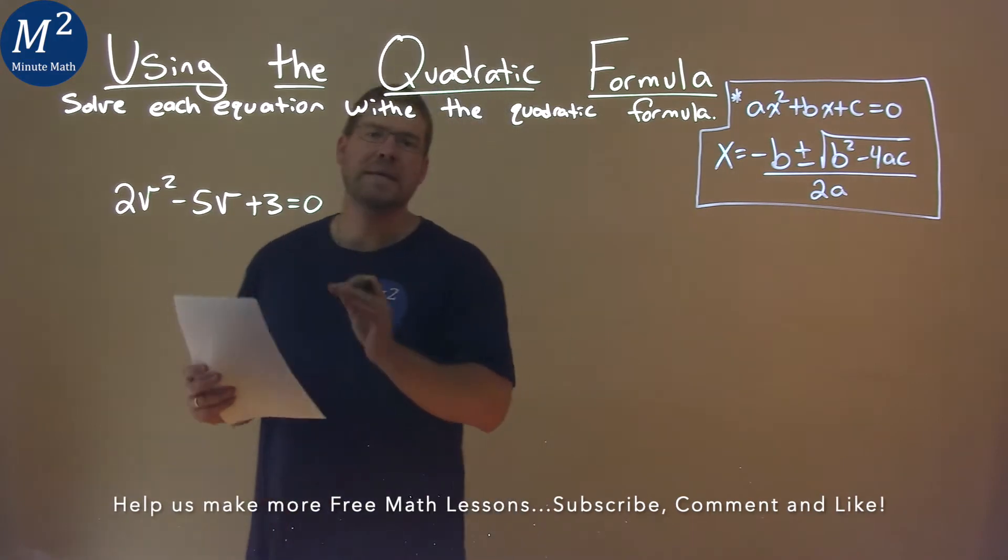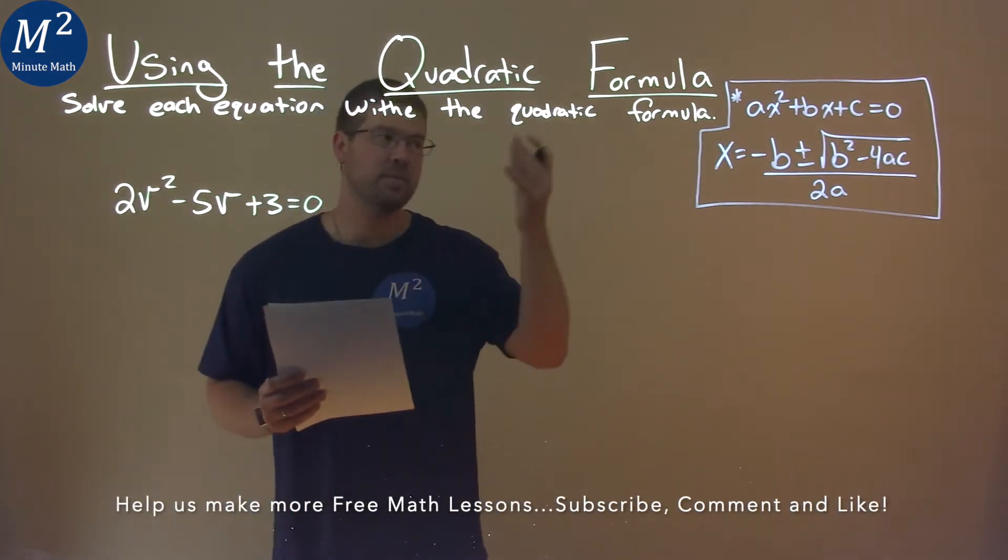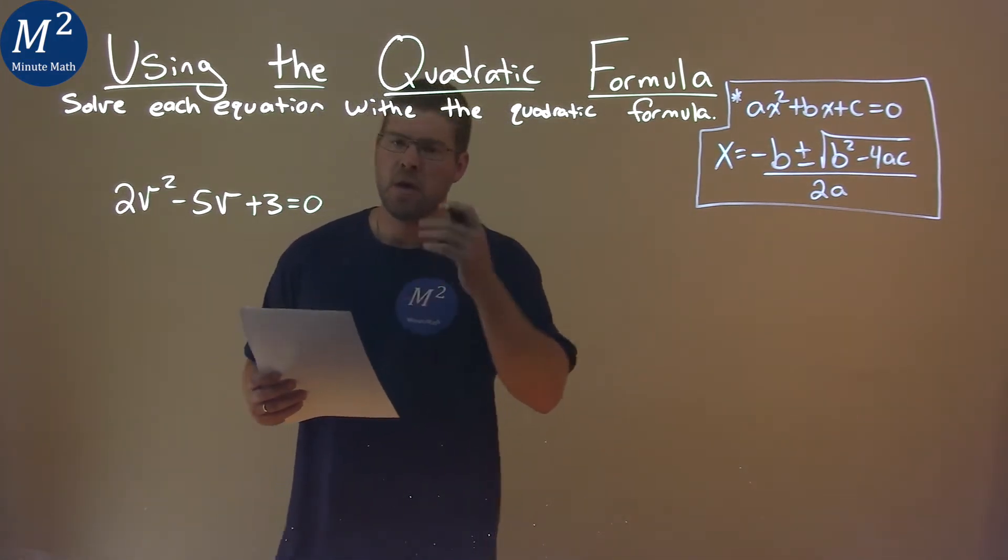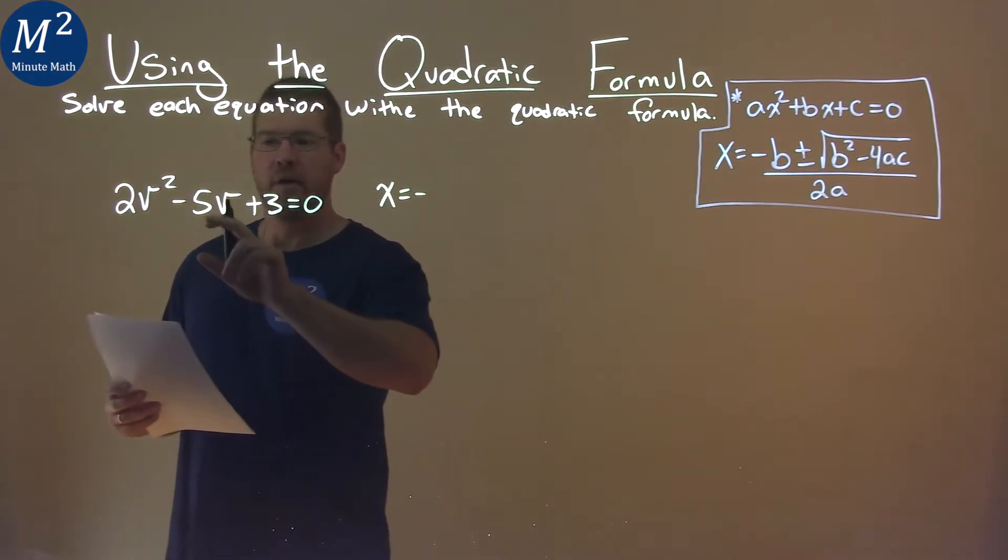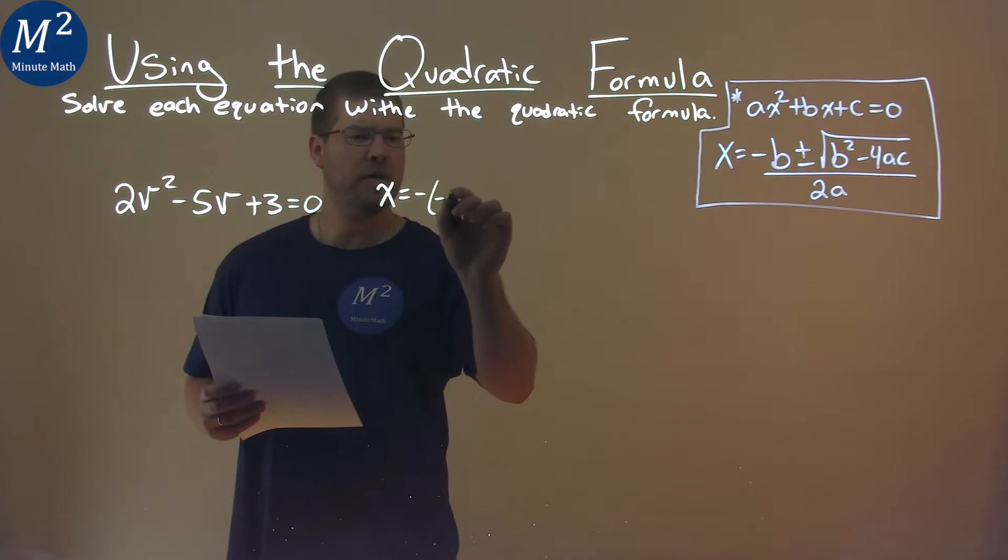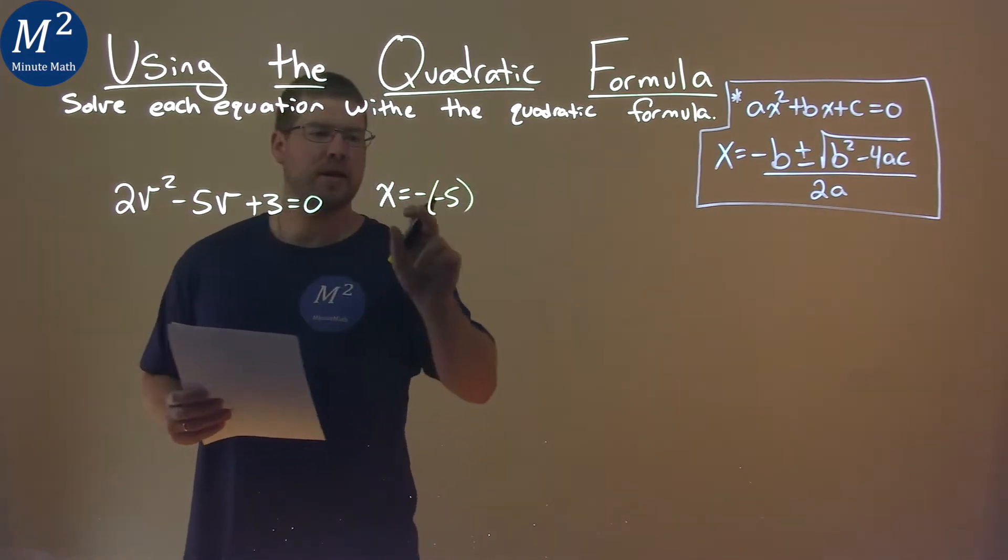Our equation is already equal to 0, so we can use the quadratic formula. We have to use our formula here, so x equals negative, and my b value is negative 5, so make sure you have that double negative going on here.